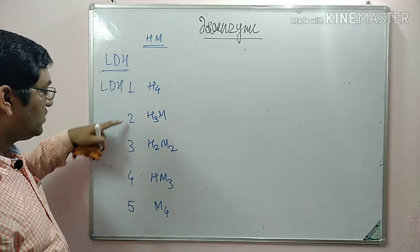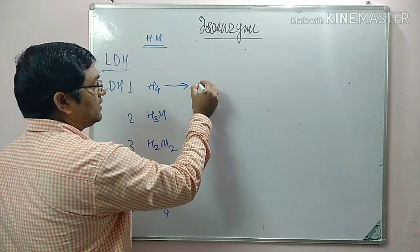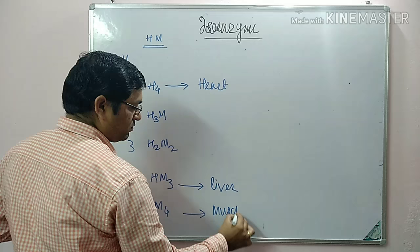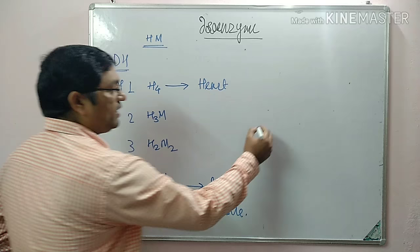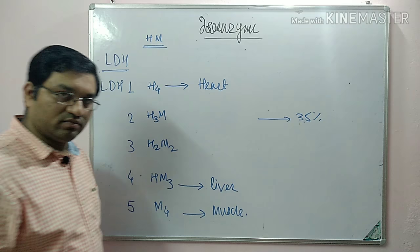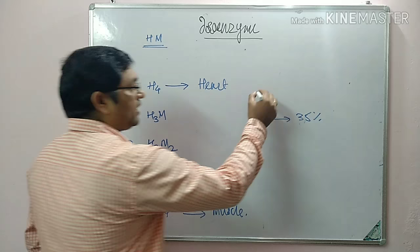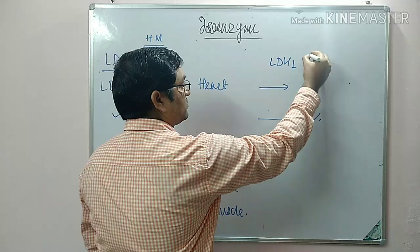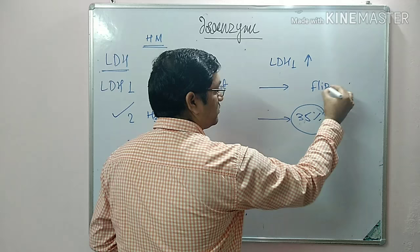In normal conditions, LDH2 constitutes about 35% of total LDH activity — the highest concentration — followed by LDH1 at about 27%. But in myocardial infarction, the concentration of LDH1 increases compared to LDH2 — that is known as the flipped pattern of LDH. LDH1 is the fastest moving in electrophoresis while M4 (LDH5) is the slowest.